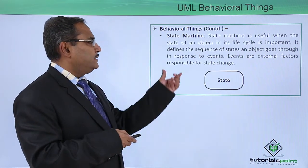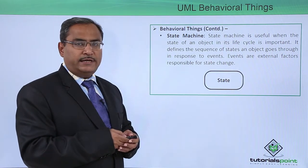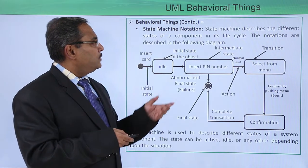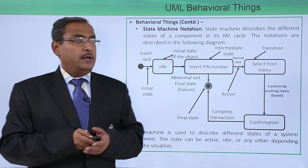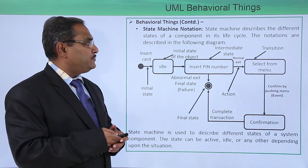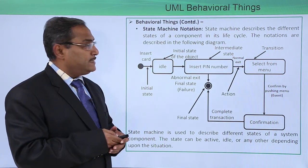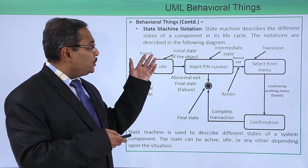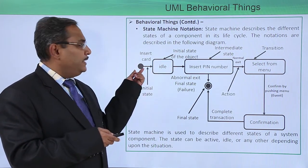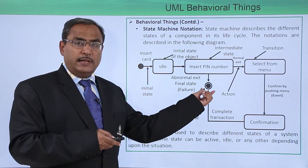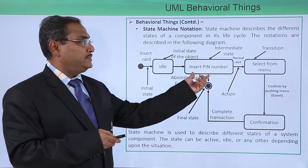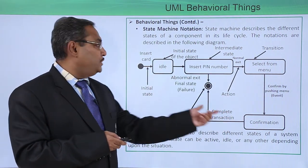Events are external factors responsible for the state change. The state machine notation describes the different states of a component in its life cycle, as shown in the following diagram. This is the initial state, this is the final state, and these are the different intermediate states of the respective object.